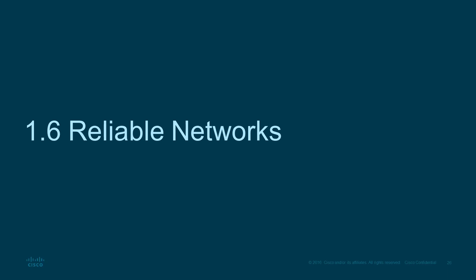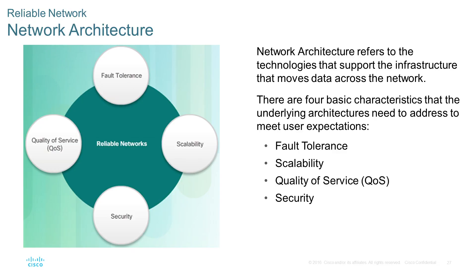Your network should be reliable. What do we mean by reliable? That means it should be fault tolerant, it should be able to add devices to it, it should guarantee a good quality of service and good bandwidth, and it should be secure. These are the four main important aspects of network architecture.